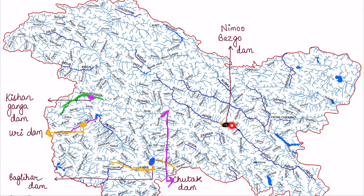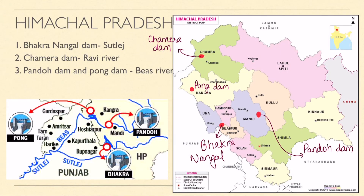The next state is Himachal Pradesh, which has four important dams. First is Bhakra Nangal Dam - very important - on the Sutlej River. Second is Chamera Dam on the Ravi River. Third is Pando Dam and fourth is Pong Dam - both Pando and Pong are on the Beas River.